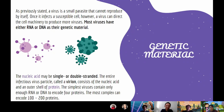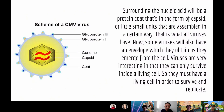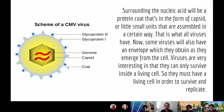The infecting virus particles, called a virion, consist of the nucleic acid and an outer shell of proteins. Surrounding the nucleic acid will be a protein coat in the form of a capsid, or small units that are all assembled in a certain way. As shown in the picture, this is a scheme of a CMV virus, which has glycoprotein 3, glycoprotein 1, the genome, and the capsid surrounding the genome. And finally, the coat.